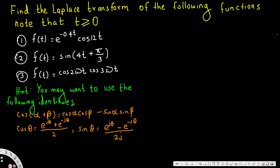Let's look at this problem. This question is asking: find the Laplace transform of the following functions, note that t is greater than or equal to zero. The first one is f(t) = e^(-0.4t) cos(12t), and the second one is f(t) = sin(4t + 5/3).